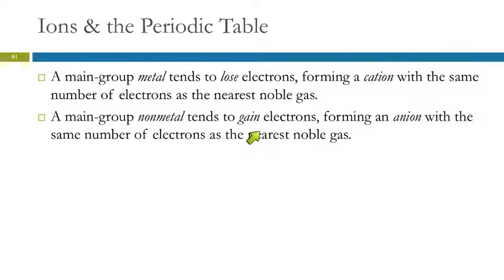Non-metals tend to gain electrons, gaining negative charges. They form anions and they're also going to have the same number of electrons as the nearest noble gas.